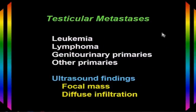We occasionally encounter metastases inside the testicle. These look like tumors because they're focal lesions. We may see leukemia or lymphoma. Sometimes genitourinary primaries will metastasize to the testicle, and rarely other primaries may be seen there as well. On ultrasound we'll see a focal mass in most cases, but occasionally metastatic lesions will show diffuse infiltration, particularly lymphoma or leukemia.